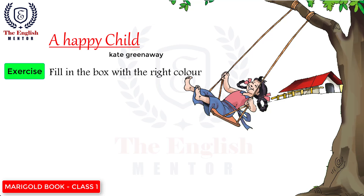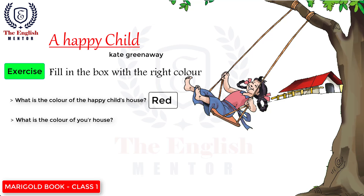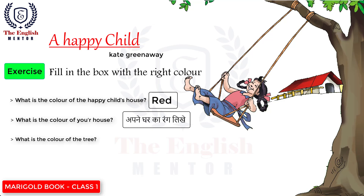Red pen. Second exercise: Fill in the box with the right color. What is the color of the happy child's house? The answer is red. What is the color of your house? It depends on you. What is the color of the tree? The answer is green. What is the color of the sun? The answer is yellow.